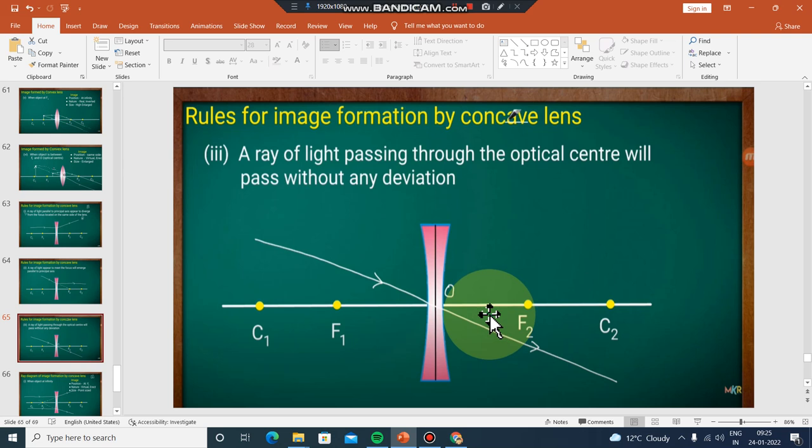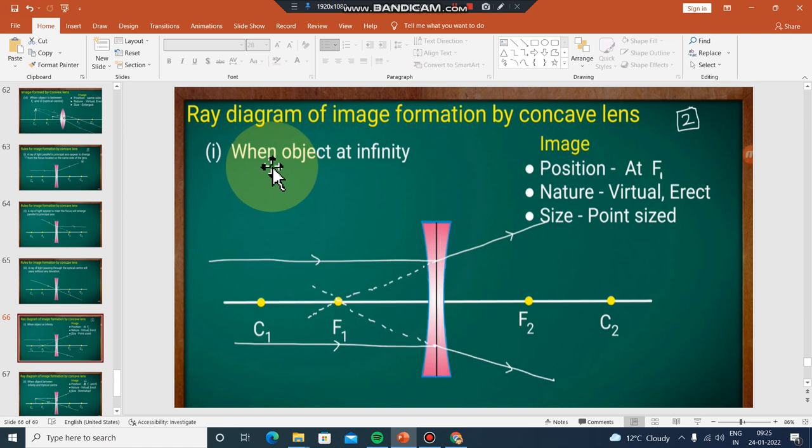When the object is at infinity, parallel rays diverge and appear to meet at the imaginary focus. The image forms at the focus on the same side of the lens.